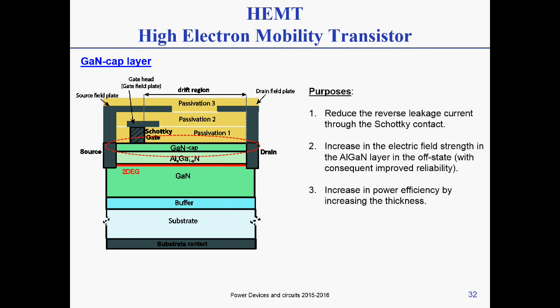The GaN cap — we mentioned it already. In the off state, we don't want any current going through the gate. If you have a layer of GaN cap, you block the leakage going through the gate. But there is a trade-off: typical thicknesses are between 3 and 7 nanometers — no more than that — otherwise you kill the two-dimensional electron gas beneath.